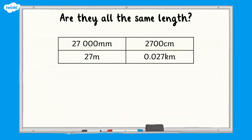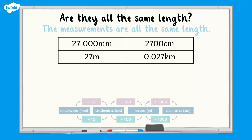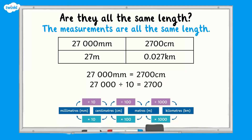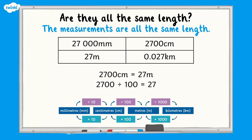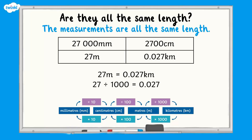Now I think you're ready for a challenge. Take a look at these measurements — are they all the same length? Pause the screen and explain your answer. The measurements are all the same length: 27,000 millimetres equals 2,700 centimetres because 27,000 divided by 10 equals 2,700. 2,700 centimetres equals 27 metres because 2,700 divided by 100 equals 27. And 27 metres equals 0.027 kilometres because 27 divided by 1000 equals 0.027.